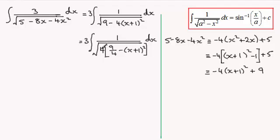Now we've got here the square root of 4 so that's 2 and I can pull that out the front. So we get 3 over 2 times the integral of 1 all over the square root of, well 9 over 4 becomes 3 over 2 all squared.